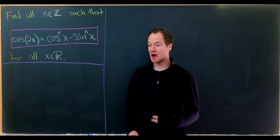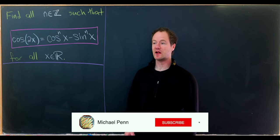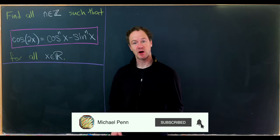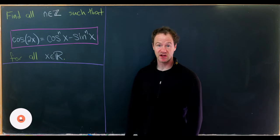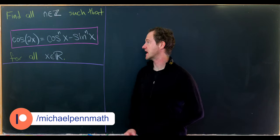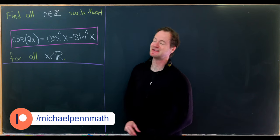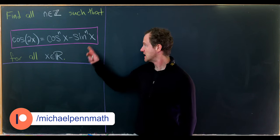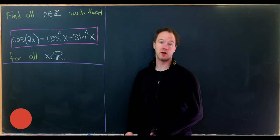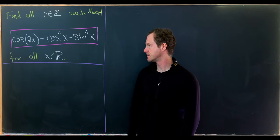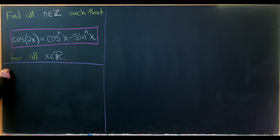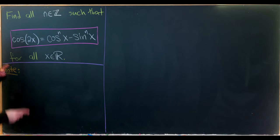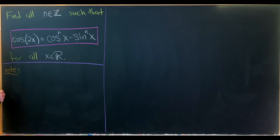Today I've got a really nice trigonometry problem built out of a well-known identity. Our goal is to find all integers n such that cosine of 2x equals the nth power of cosine of x minus the nth power of sine of x, and this must hold for all x in real numbers. Let's get started.